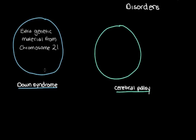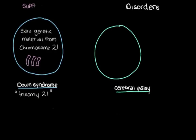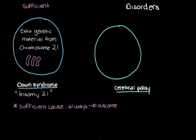Why would this happen? Usually because the person has three copies of chromosome 21 rather than two — referred to as trisomy 21, where tri means three, somi refers to chromosome, and 21 refers to the 21st chromosome. When someone has this extra genetic material from chromosome 21, they will develop Down syndrome. We call this type of cause a sufficient cause, where sufficient means that every time this happens, the outcome — Down syndrome — will always follow. It's like throwing water on you: you will definitely get wet every time.